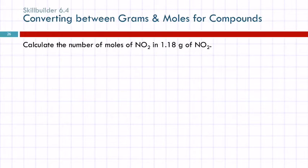Calculate the number of moles of NO2 in 1.18 grams of NO2. Well, again, there's a lot of words in here. There's only one number. It's got to be what we're starting with. 1.18 grams of NO2. And then what are we trying to get to? Calculate the number of moles. So we want moles of NO2. We can convert between grams and moles in one step.